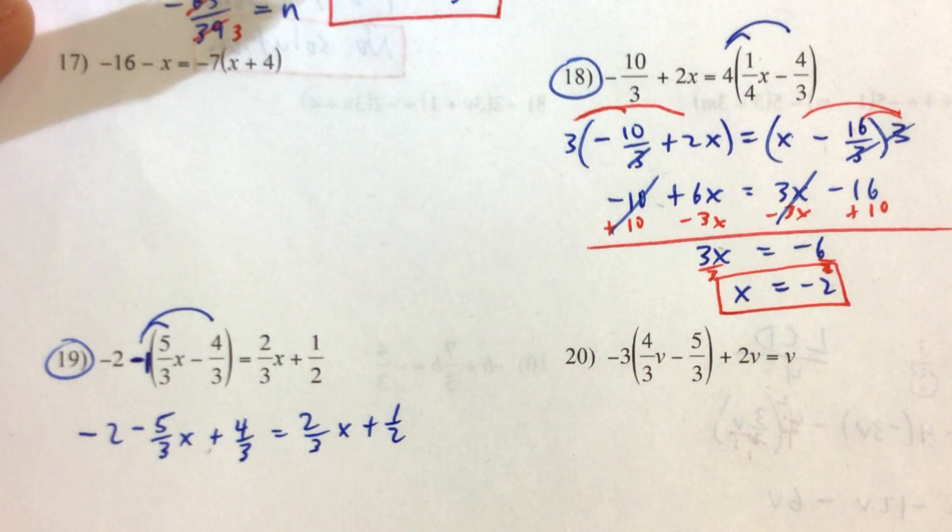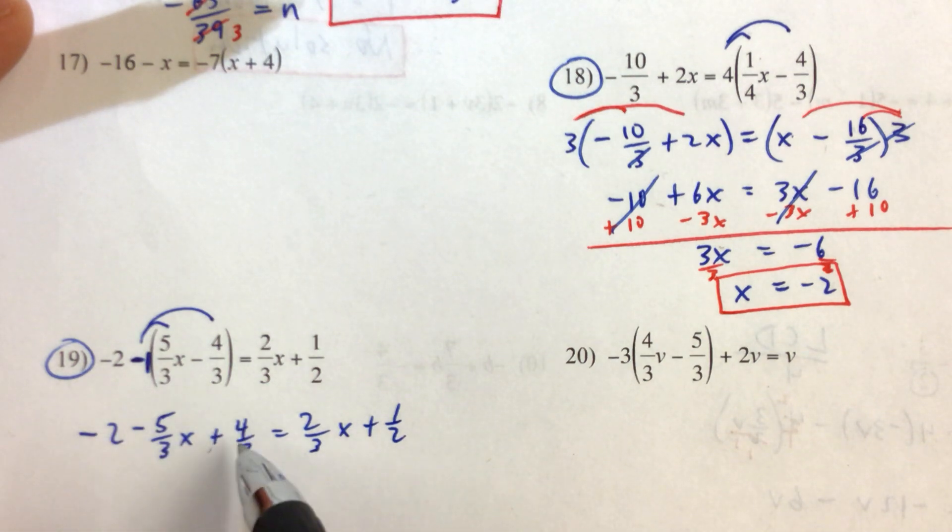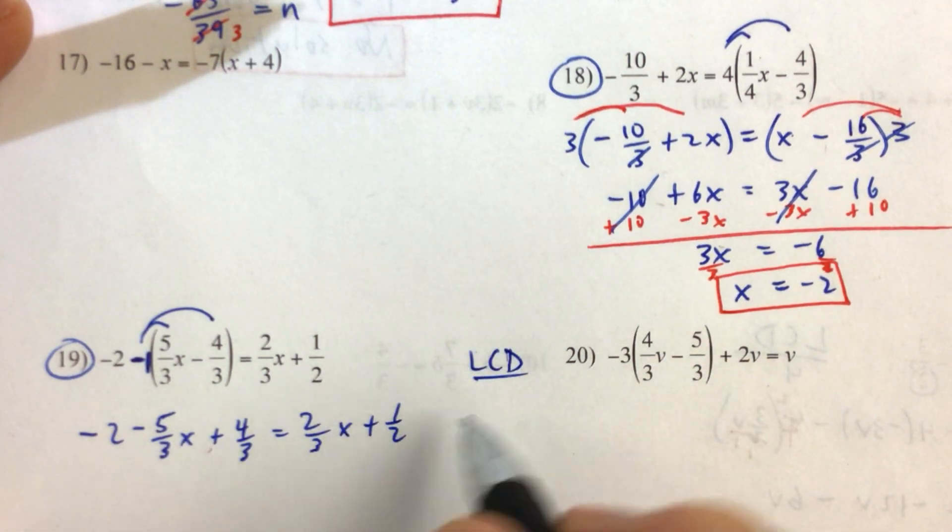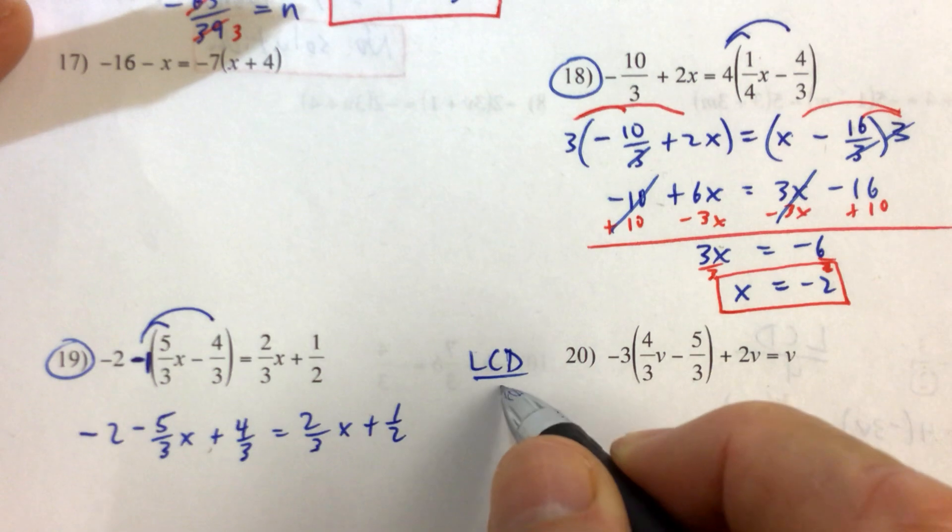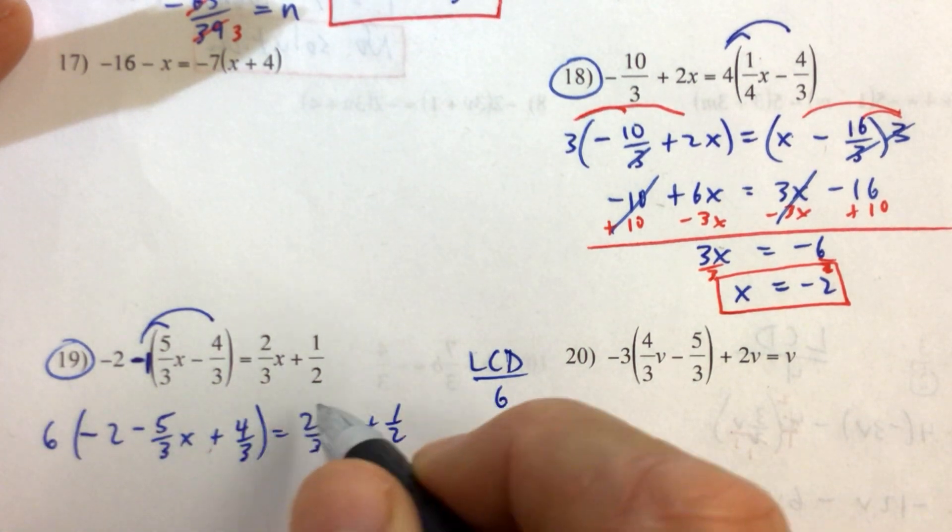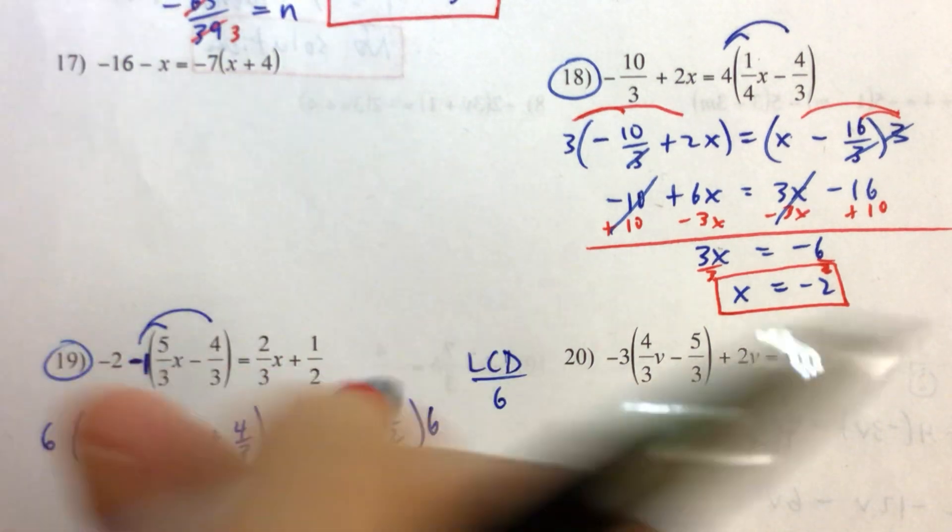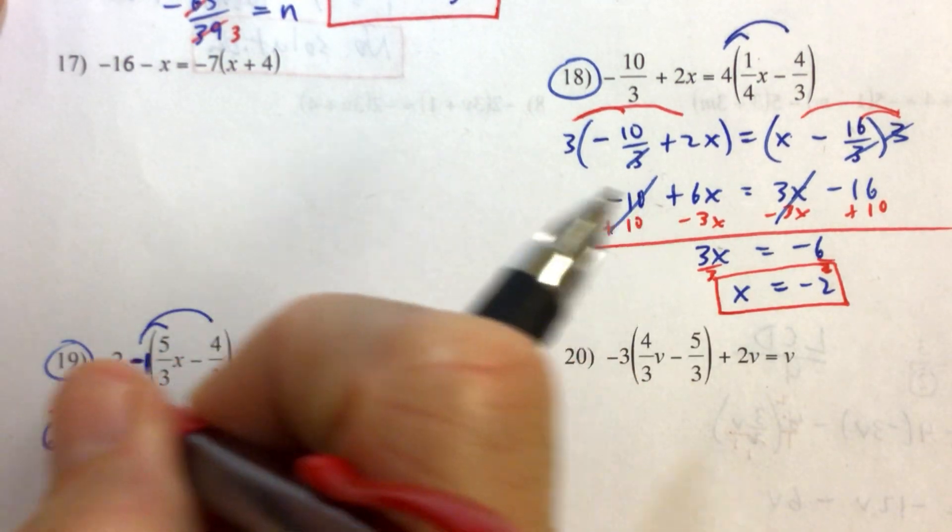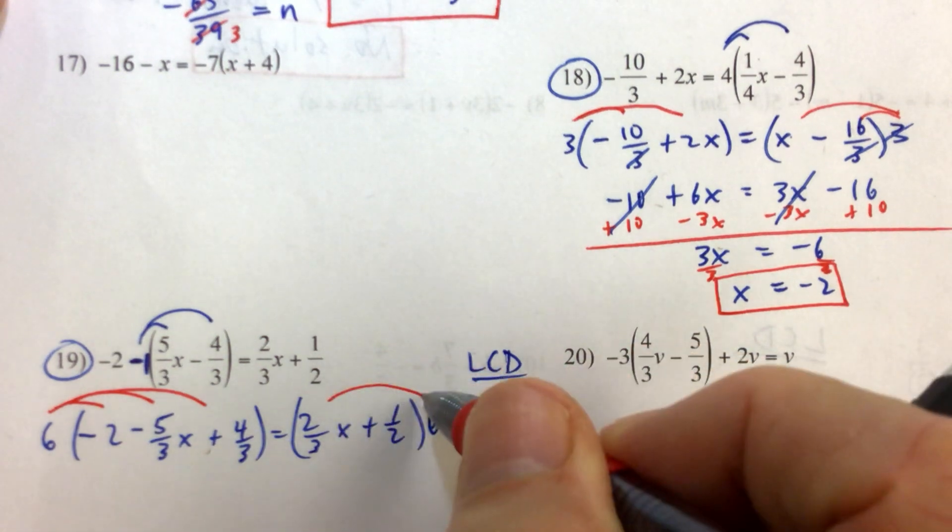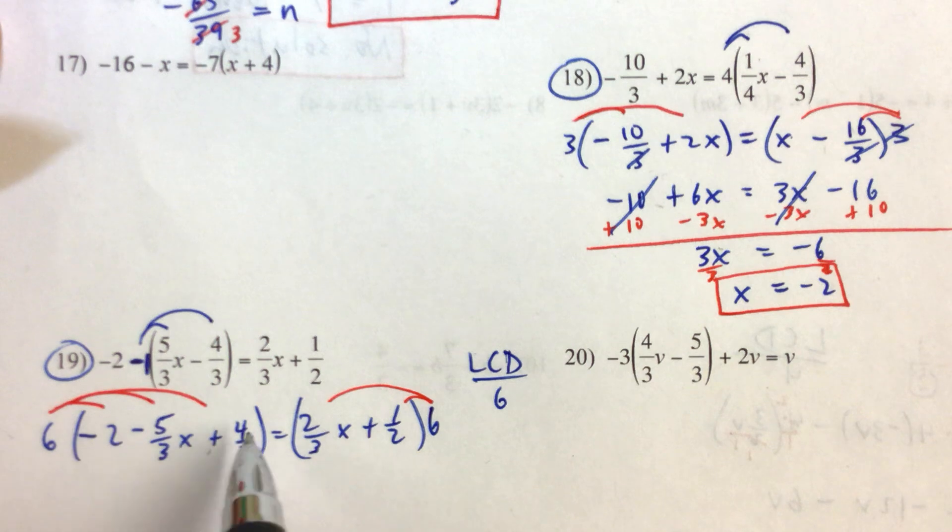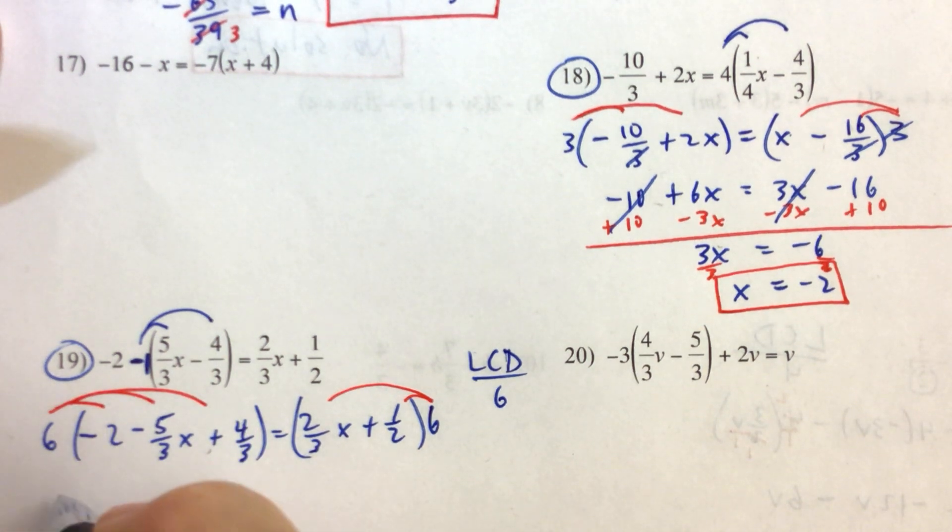So getting rid of the parentheses is helpful. We could combine the negative 2 and the 4/3, but then we're just still dealing with fractions. So let's recognize here that the lowest common denominator is 2 times 3, that's 6. So we're just going to multiply both sides of the equation by 6. On the left hand side, there's actually 3 terms to distribute this 6 to, and on the right hand side, there's 2 terms. 6 times negative 2 is negative 12.